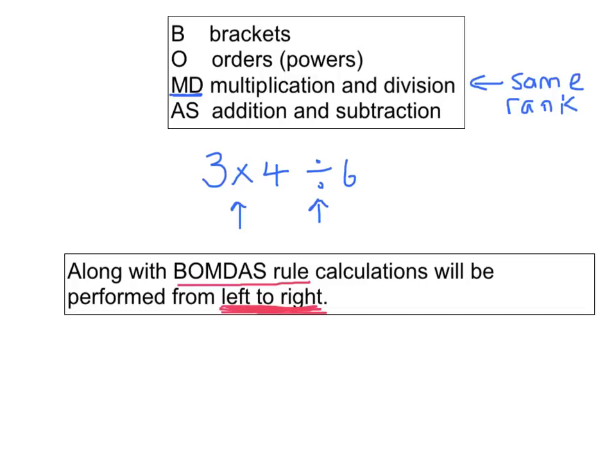So we're going to employ this rule here now. So if we perform the left to right rule, we have to do the multiplication first. So 3 multiplied by 4, divided by 6, is going to be equal to—we're going to do this first. So 3 multiplied by 4 is 12, and then we're going to divide the answer by 6, and the answer is going to turn out to be 2. So to recap, if two operations have the same rank, the calculation will always be performed from left to right.